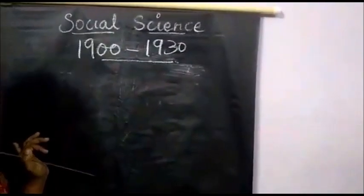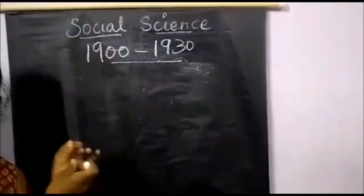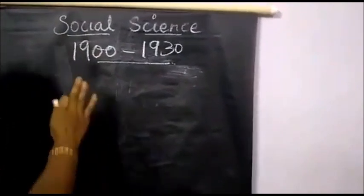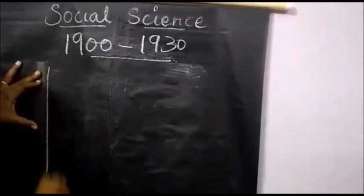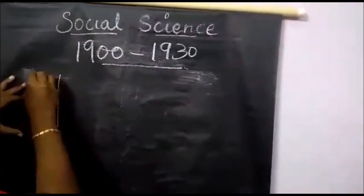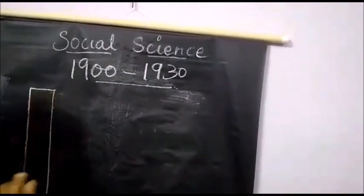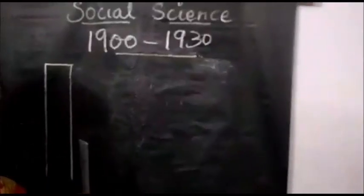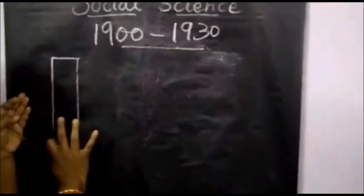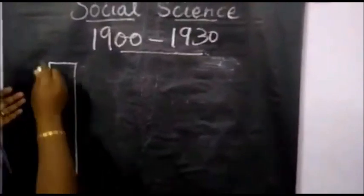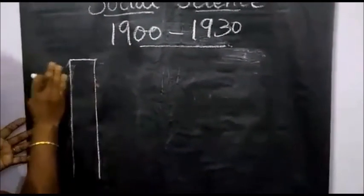Second tip: take your scale and draw your line the same length as the scale. Third tip: measure 5 years or 10 years intervals. Fourth step: write the years on your left side.